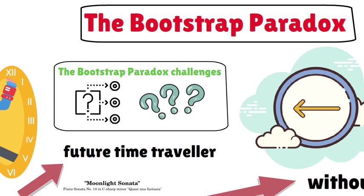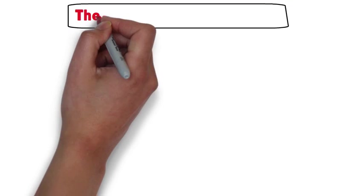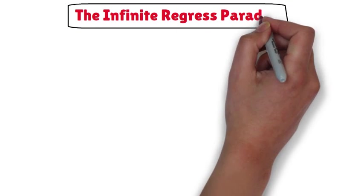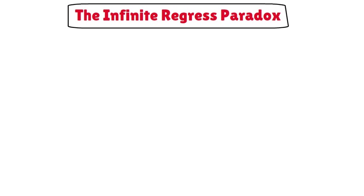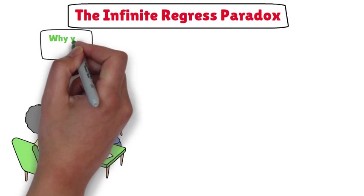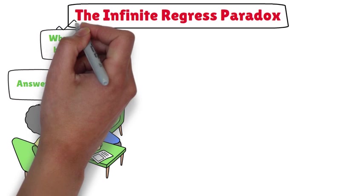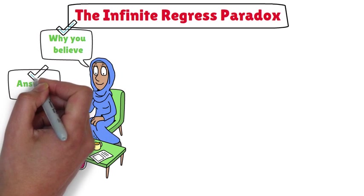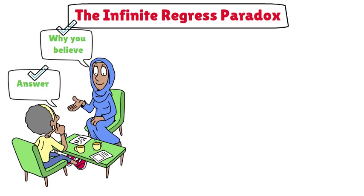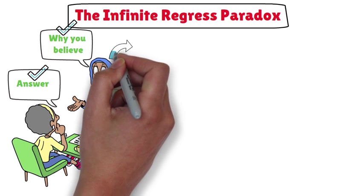The Infinite Regress Paradox is like a never-ending loop in our thinking. Imagine you ask someone why they believe something. They give you an answer, but when you ask why they believe that, they give you another answer, and it keeps going on and on. It's like chasing your tail in circles with no end in sight.